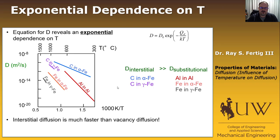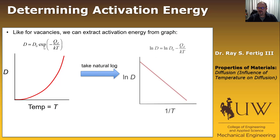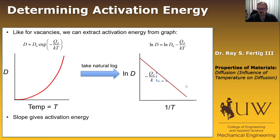To determine the activation energy, we take the same approach used for vacancy activation energy. If we take the natural log of both sides of the Arrhenius equation, we get: ln(D) = ln(D-naught) − Q_D / (KT), which is linear. The slope gives us the activation energy divided by K, so we can read off the activation energy from the slope, and the intercept gives us D-naught.